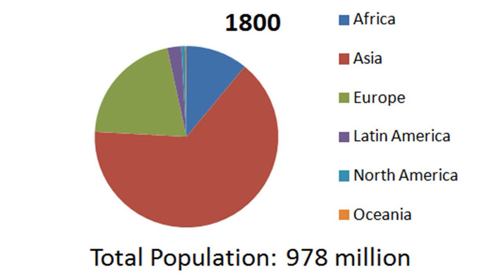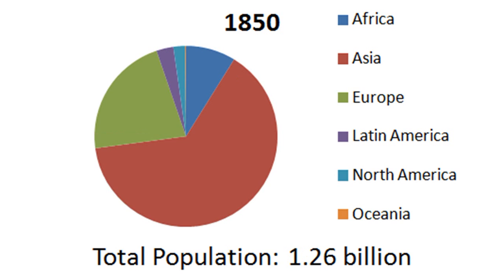By 1800, approaching the billion mark, close to three-quarters of the population appears to be in Asia. Europe is holding steady at about a quarter of the population. Africa looks about half of that, and Latin America, North America, and Oceania make up a tiny sliver. By 1850, topping a billion, we still have a very large chunk in Asia, a small increase in the percentage in Europe, Africa holding steady, and some growth in Latin America and North America.